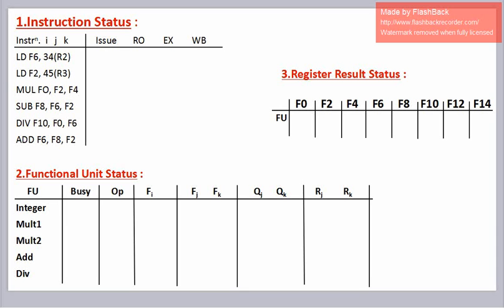In functional unit status we have the functional unit. In scoreboard we have 1 integer unit, 2 multiplier units, 1 adder unit, and 1 divider unit. The fields include: busy field, operation field, destination register field, source register fields fj and fk, then qj and qk fields representing the functional units which are going to produce our source registers, and rj and rk fields representing flags for whether the source registers are present. In register result status, we have the functional unit that is going to write the register.